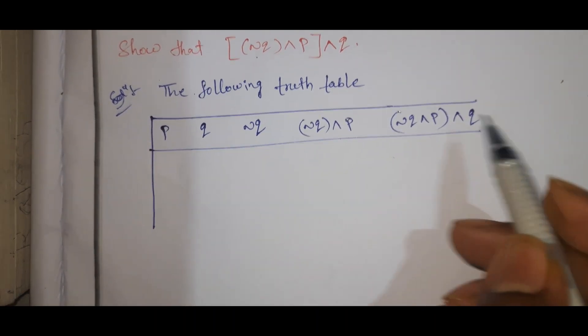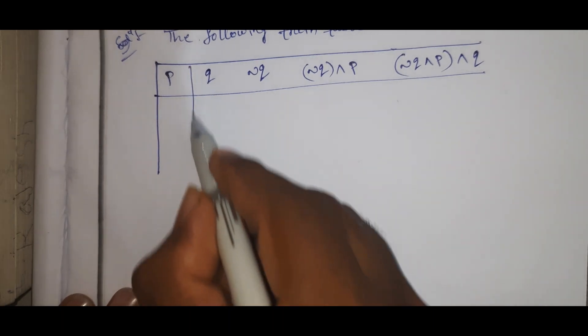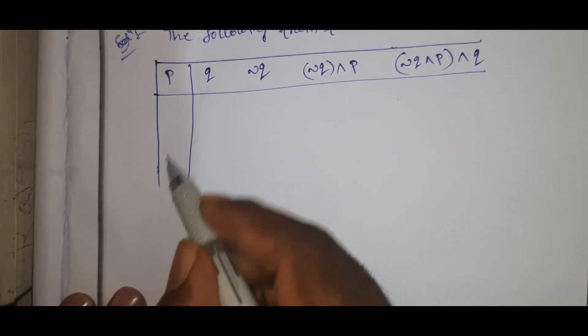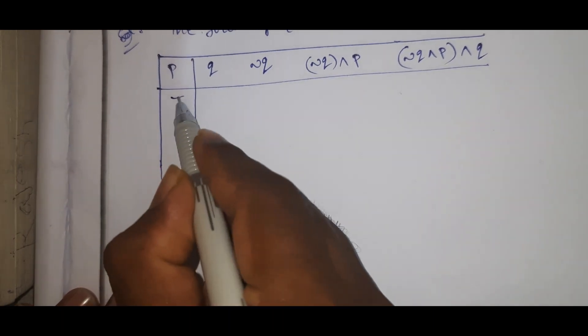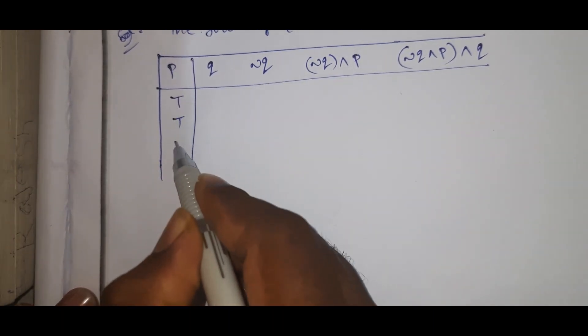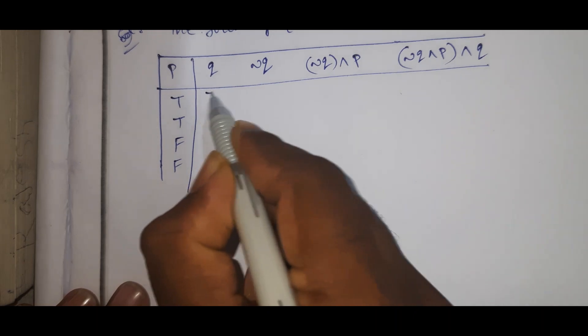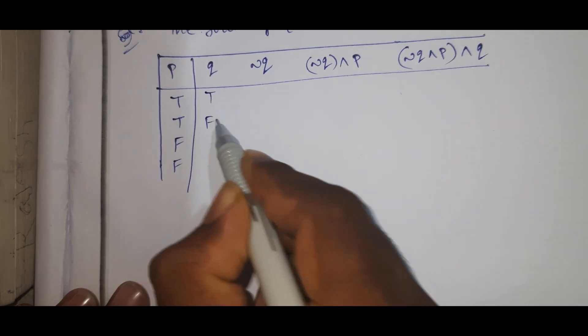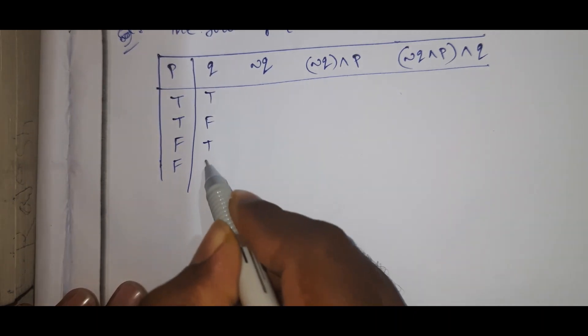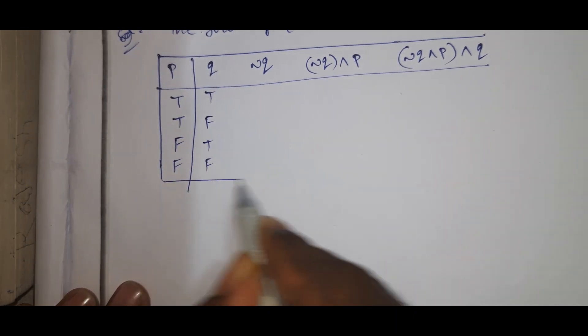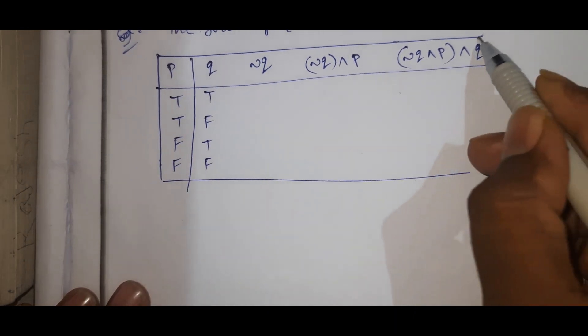Now I will show you the values. The P column is: true, true, false, false. The Q column is: true, false, true, false.